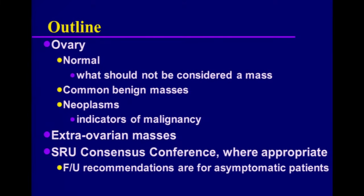We're going to review ovarian masses primarily. First we'll talk about the normal ovary and several things that really should not be considered or reported as a mass. We'll talk about common benign masses, neoplasms, and particularly the most important indicators of malignancy. We'll review some extra-ovarian masses, and a lot of the recommendations and criteria are based on the SRU Consensus Conference on adnexal cysts and other masses. The recommendations will be for asymptomatic patients.